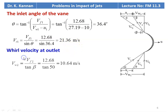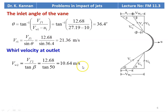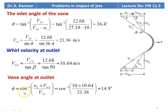For the outlet velocity: Vw2 = Vf2 / tan(beta). Since for frictionless flow Vr1 = Vr2 and Vf1 = Vf2, Vw2 = 12.68 / tan(50°) = 10.64 m/s. The vane angle at the outlet phi = cos⁻¹((U2 + Vw2) / Vr2) = cos⁻¹((10 + 10.64) / 21.36) = 14.9°.